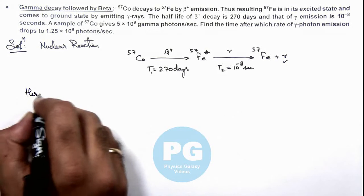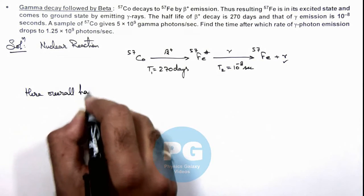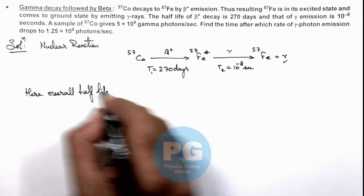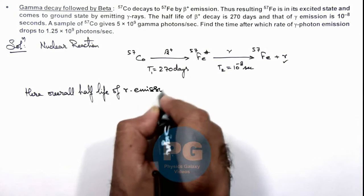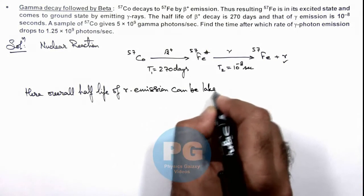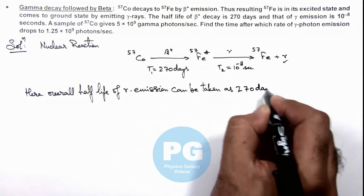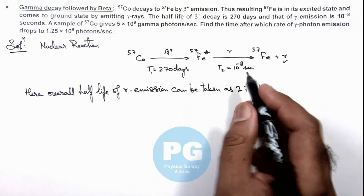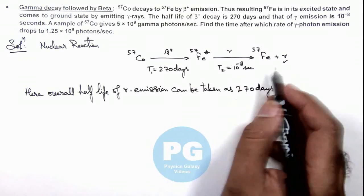So here we can say, here overall half-life of gamma emission can be taken as 270 days, and we can ignore this time period because the second part of the reaction is almost instantaneous.